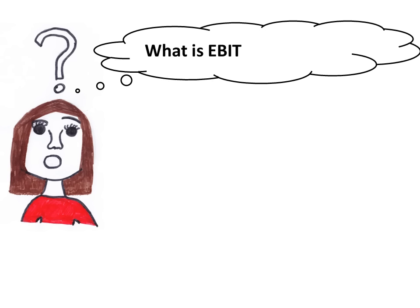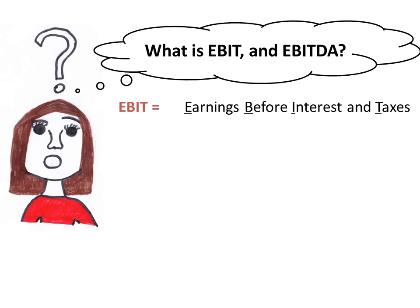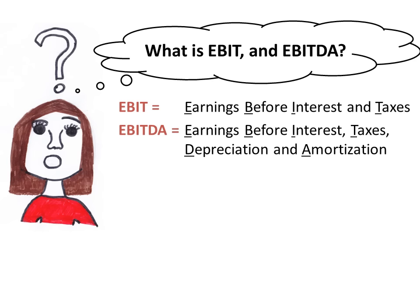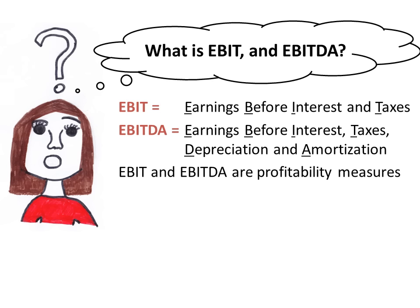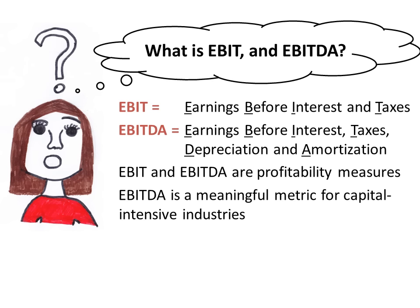In summary: EBIT is earnings before interest and taxes. EBITDA is earnings before interest, taxes, depreciation and amortization. Both EBIT and EBITDA are measures of profitability, along with terms like gross profit and net income. EBITDA is a meaningful metric for capital-intensive industries.